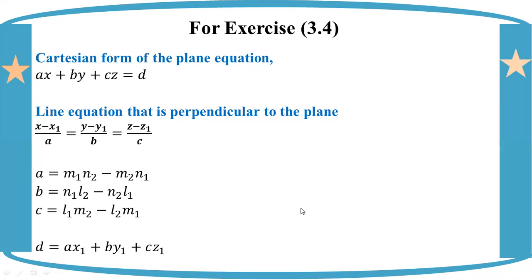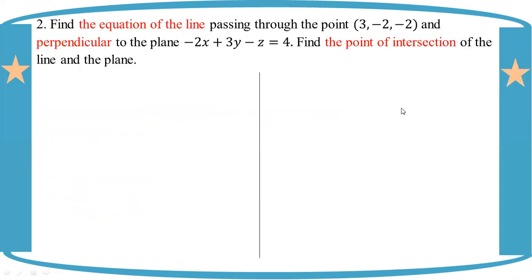Number two: Find the equation of the line passing through the point (3, -2, -2) and perpendicular to the plane -2x + 3y - z = 4.